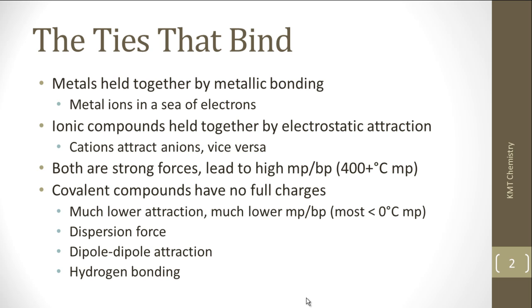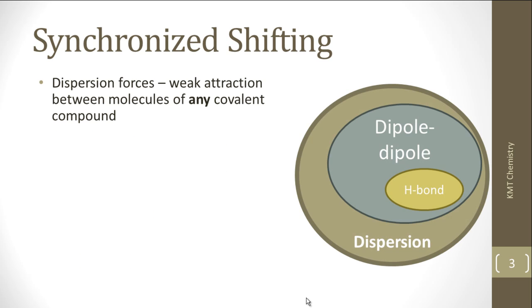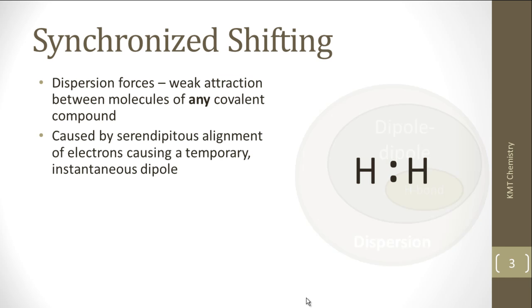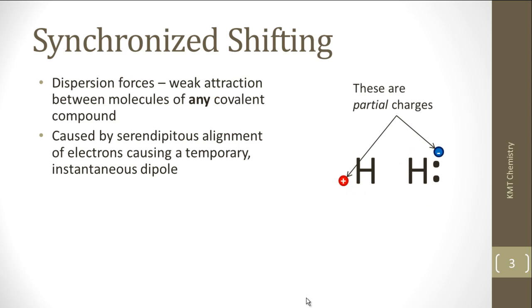The first of these is the dispersion force. The dispersion force is a weak attraction that you see in any covalent molecule. It comes from a temporary alignment of electrons between two molecules, causing a really weak charge. In any given molecule, the electrons — even though they're shared in a bond — are really moving around between the two atoms constantly. If we were to stop and take a picture, it's possible to get the electrons shifted to one side or the other, creating a very, very weak partial charge in that moment.